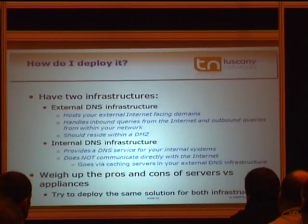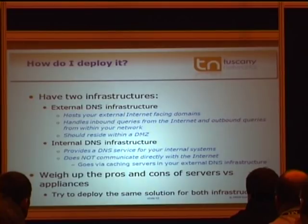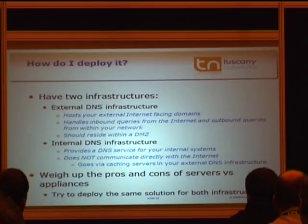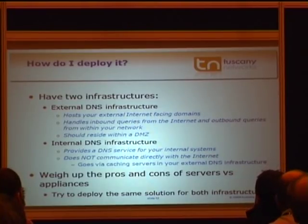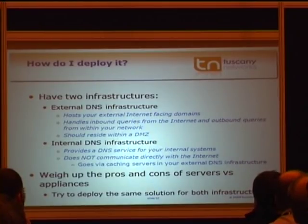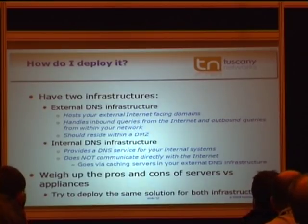So we've already mentioned having two infrastructures. The external DNS infrastructure would typically host your external internet-facing DNS domains. You may have that farmed out at the moment by your ISP. But there are other elements of that infrastructure, to do with forwarding queries out to the internet. From your internal environment, you need to be able to resolve names like Microsoft.com and Cisco.com, and that would be done via an external infrastructure residing within a DMZ, so your internal systems never communicate directly with the internet.